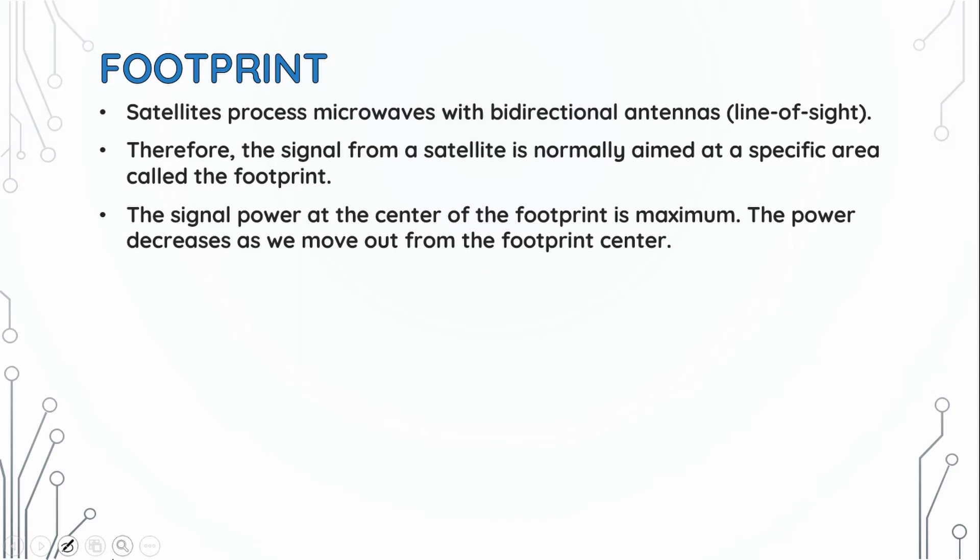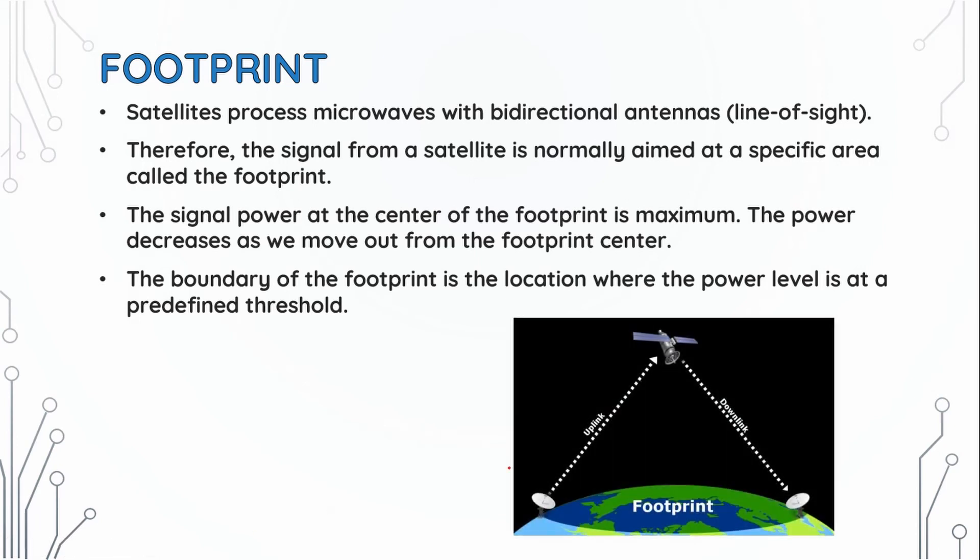The boundary of the footprint is the location where the power level is at a predefined threshold. This is an Earth station, this is a satellite. We send to the satellite, which we call the uplink, and when we receive from the satellite, we call the downlink. We call this specific area the footprint. The power decreases as we move out from the footprint center to the predefined boundary.